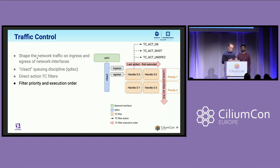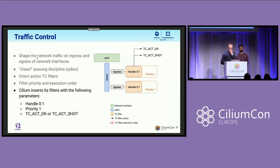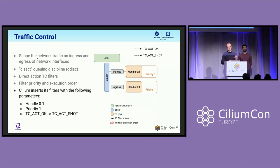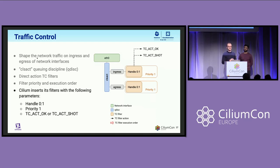With this background, let's see how Cilium uses and configures its own TC programs. There are three main things you need to know. The first is that Cilium's TC filters always answer either TC_ACT_OK or TC_ACT_SHOT — this is one way to drop packets and also a way to make sure a packet is allowed through to either a workload or to go out. Cilium hardcodes the handle and the priority to one.